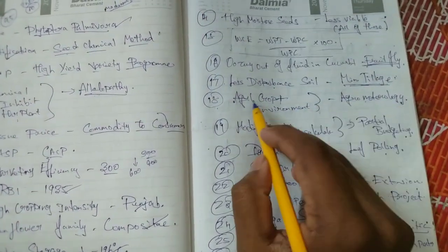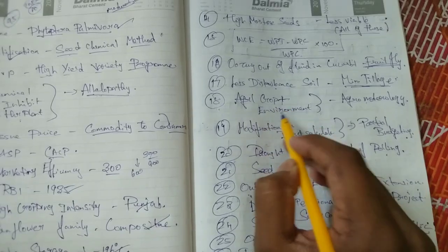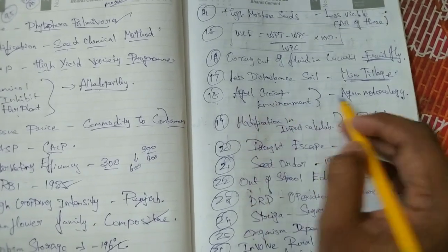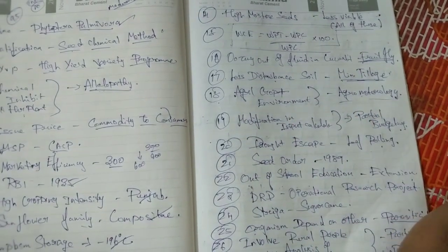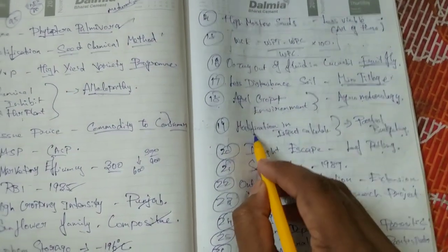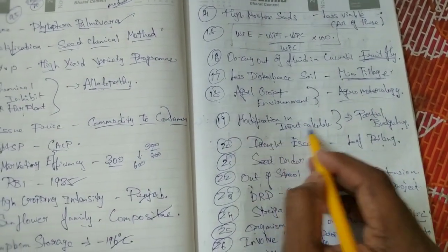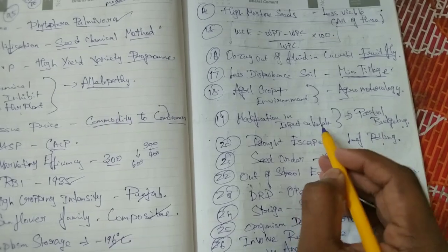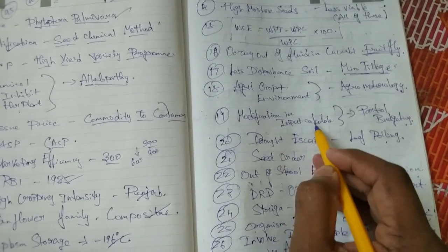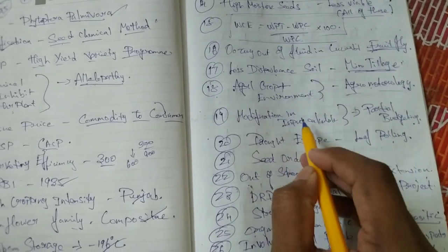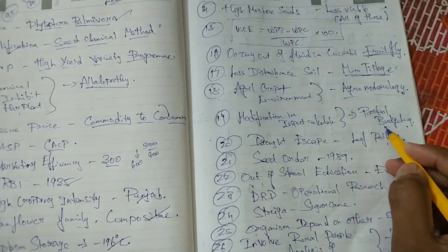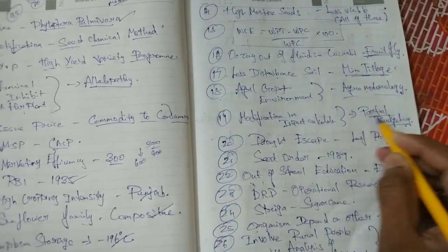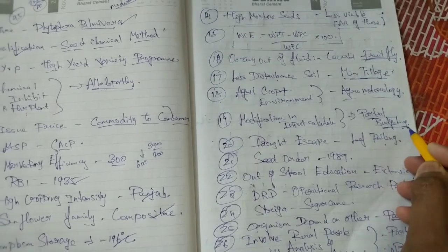That is the agro-meteorology: agri crop plus environment. That is called agro-meteorology. That is the input calculator — if you modify it, you can modify it. That is, all changes, no changes. So there is partial budgeting.